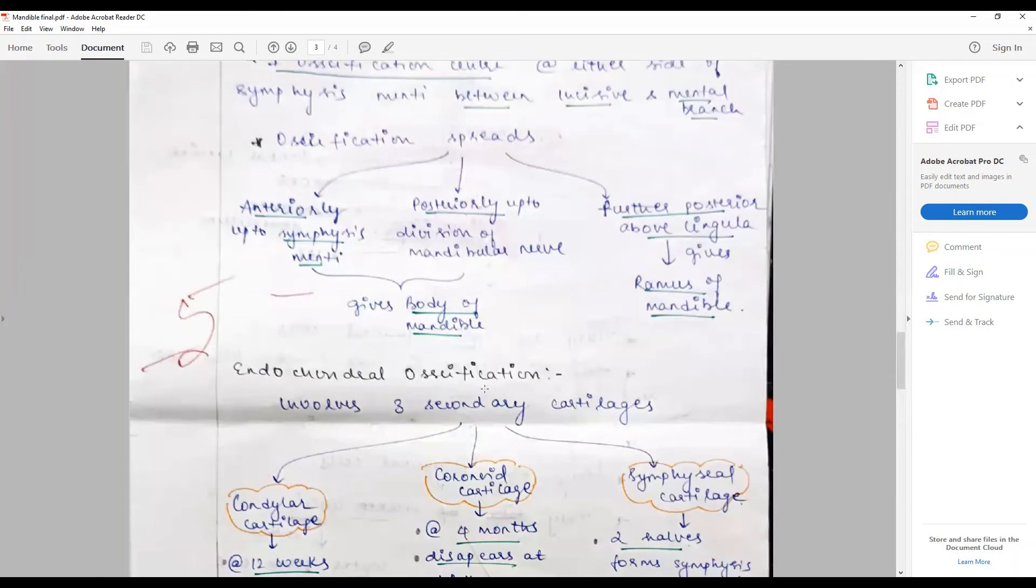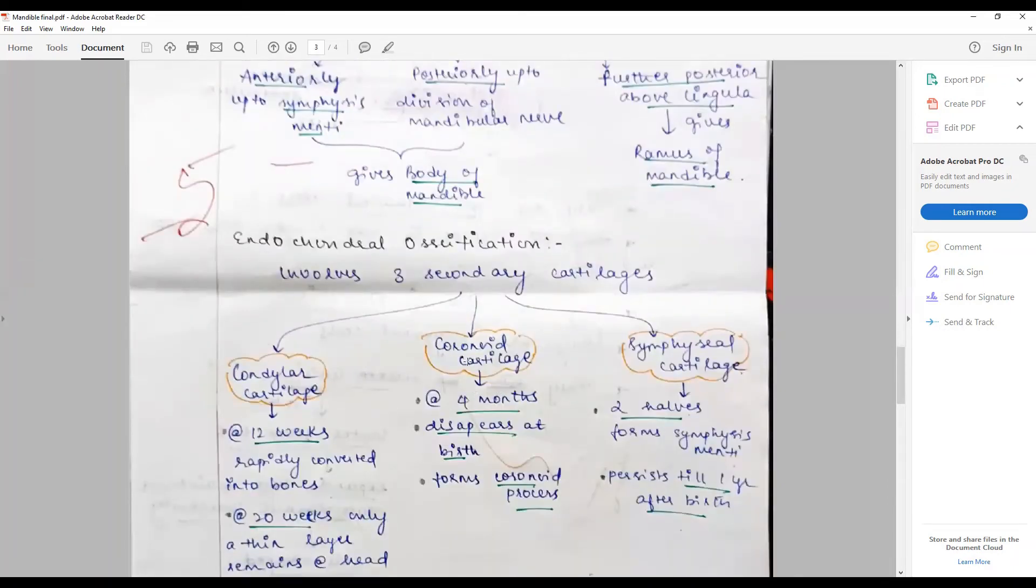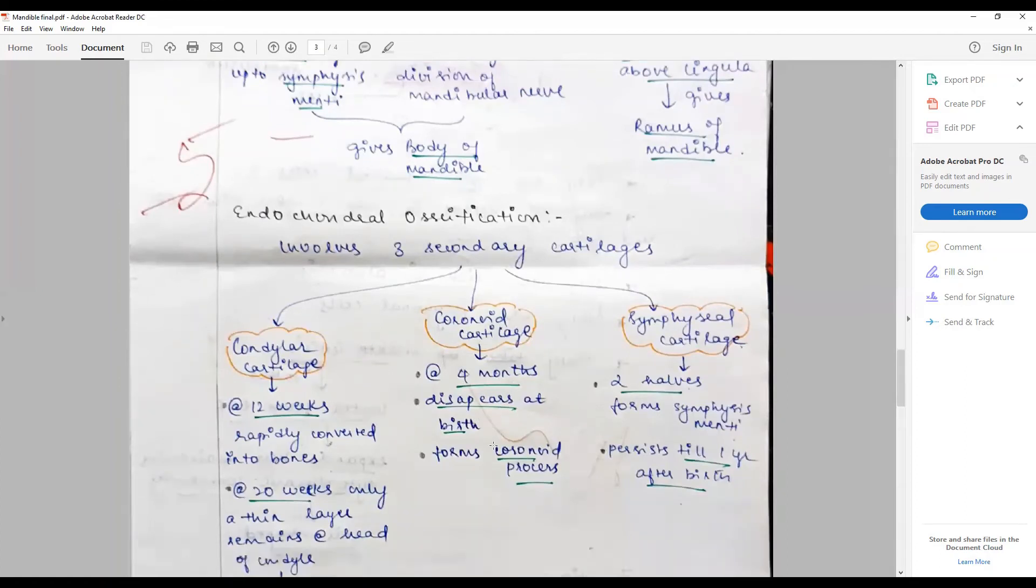The endochondral ossification begins a little bit later. Coronoid cartilage begins at the fourth month, disappears at birth - so fourth month to one year of life - and contributes to the formation of coronoid process.